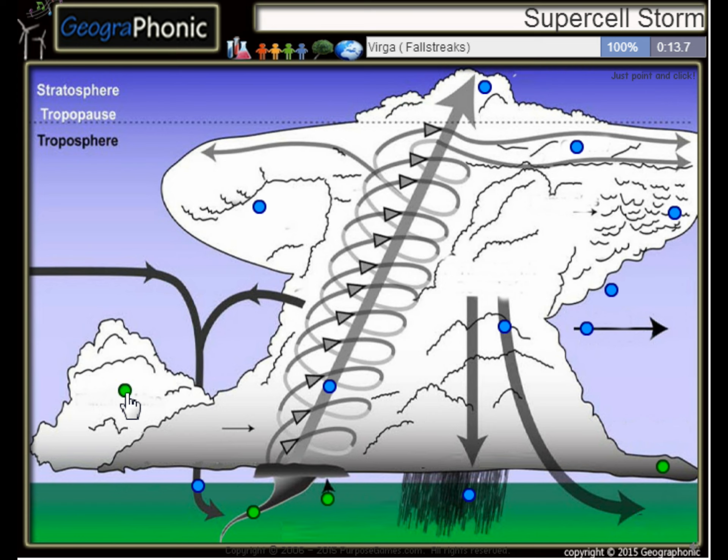This is the flanking line. Here we see virga or fall streaks. This is heavy rainfall and hail. This is the outflow and this is the mesocyclone.